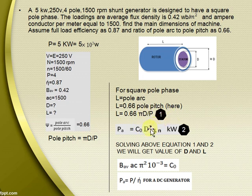Name the power equation as number 2. Solving these two equations we will get value of D and L. These are the main dimensions of the machine. Before that we have to find PA and output coefficient C0 using below equations. Other parameters are given in the question.